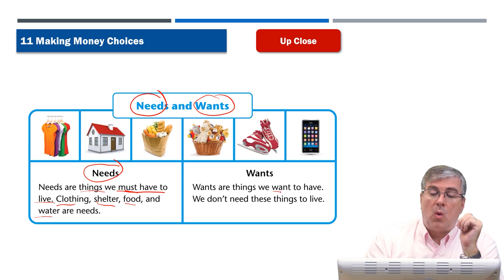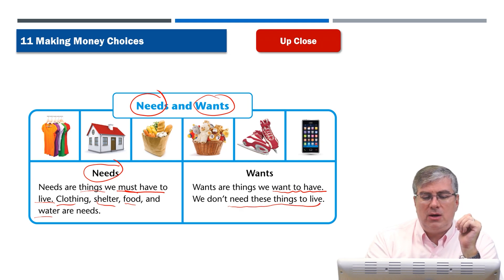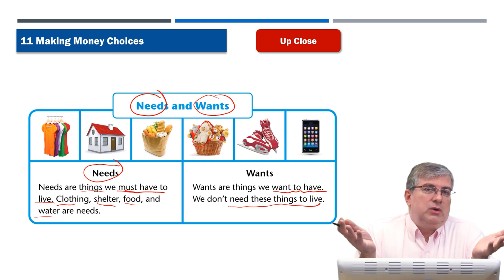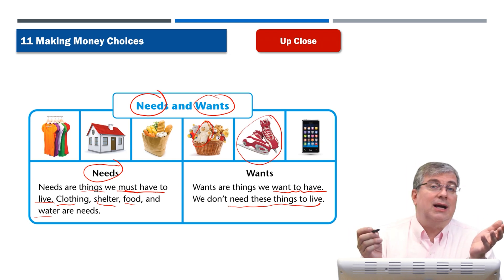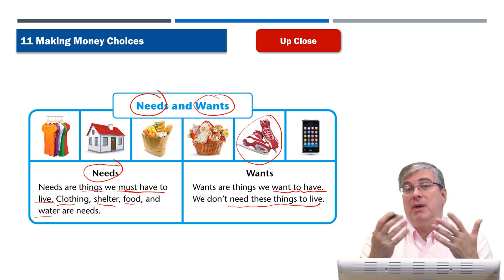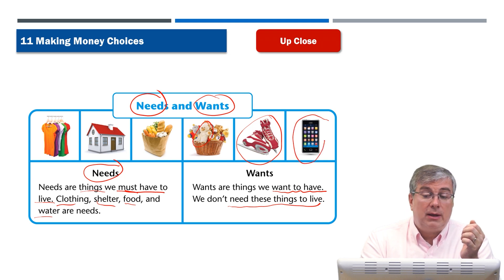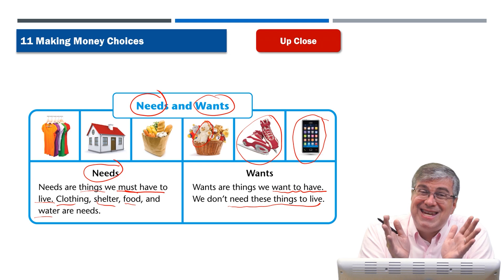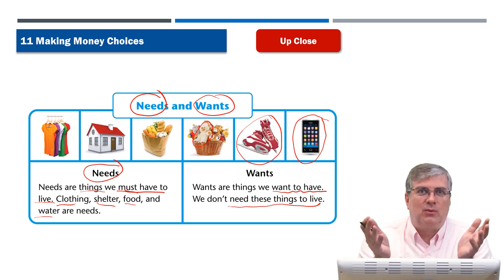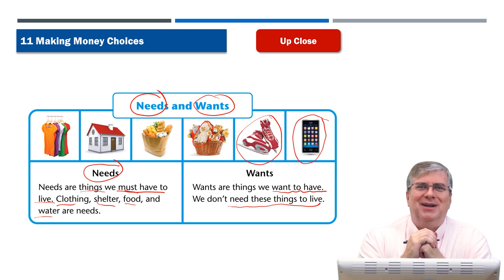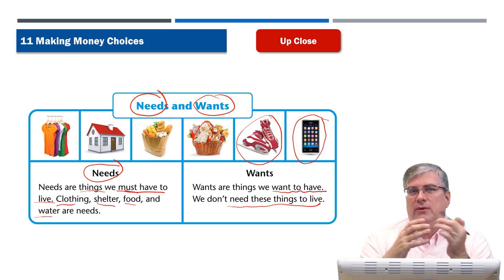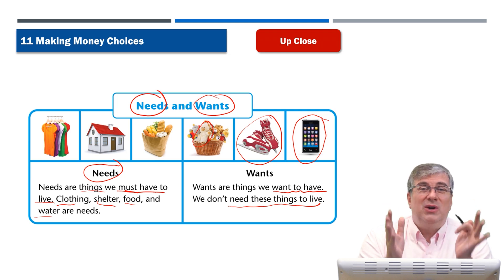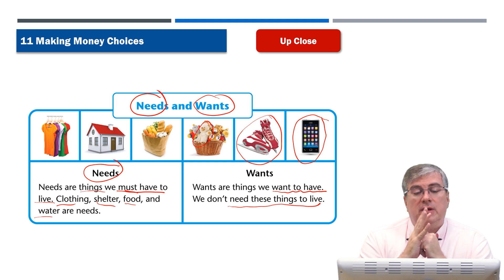Wants are things we want to have — we don't need these things to live. You don't need a stuffed animal to live; you could go through life without one. You don't need ice skates — sure, they're fun and good exercise, but you don't need them. And this is a cell phone. You don't need a cell phone to live. Of course, everybody has one, and many people will argue: 'No, I need my cell phone!' But you don't actually need it to live. It makes life easier and is important for emergencies and staying in touch with family and friends. But it's more of a want.